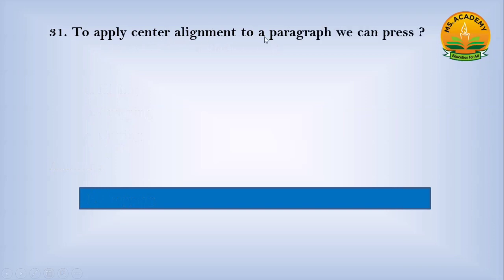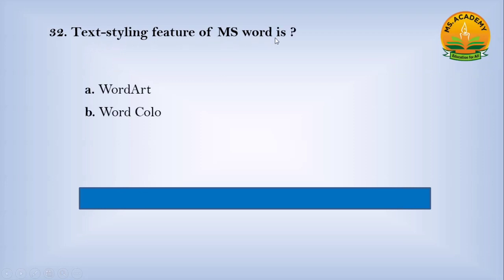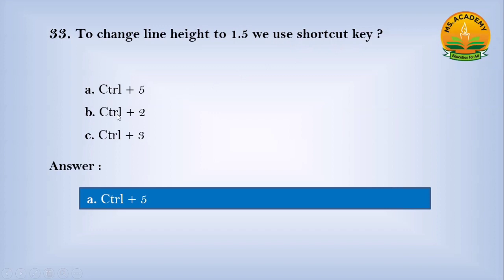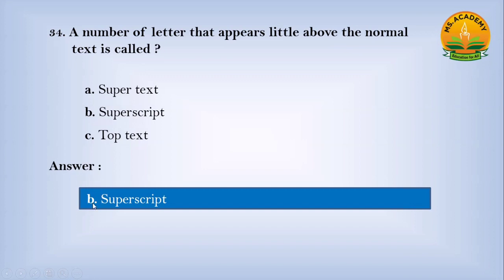To apply center alignment to a paragraph, we can press — option A: Ctrl+S, option B: Ctrl+C, option C: Ctrl+E. Answer: C — Ctrl+E. The text styling feature of MS Word is — option A: WordArt, option B: Word Color, option C: Word Font. Answer: A — WordArt. To change line height to 1.5, the shortcut key is — option A: Ctrl+5, option B: Ctrl+2, option C: Ctrl+3. Answer: A — Ctrl+5. A letter that appears slightly above the normal text is called — option A: supertext, option B: superscript, option C: top text. Answer: B — superscript.